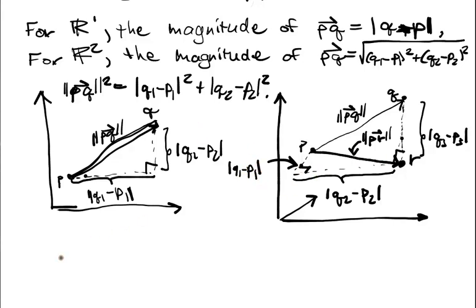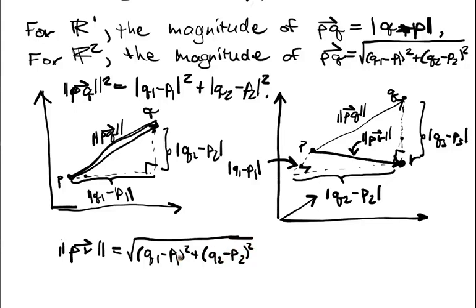Very similar objects. So that means by the Pythagorean theorem that the norm of PR is equal to the square root. It's a 2D distance now. It's going to be Q1 minus P1 square plus Q2 minus P2 square.